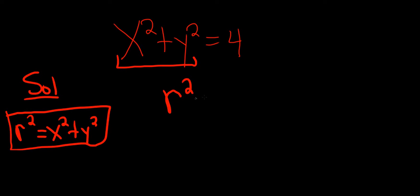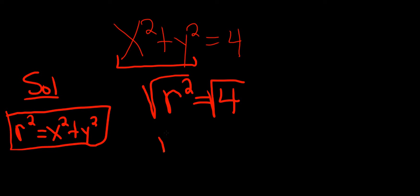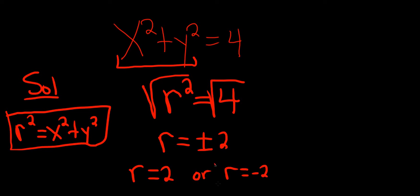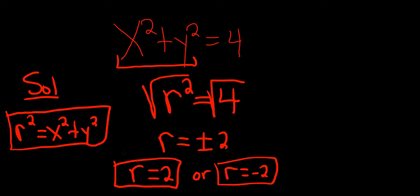We have r squared equal to 4. To solve for r, we simply take the square root of both sides. This gives us r equals plus or minus 2 — two possible answers: r equals 2 or r equals negative 2. Either of these would be a perfectly acceptable answer.